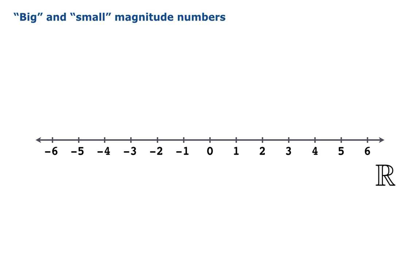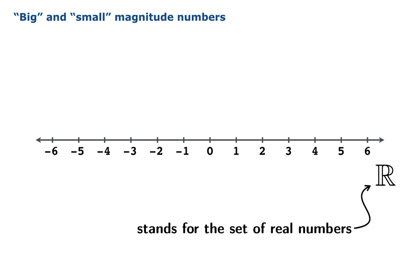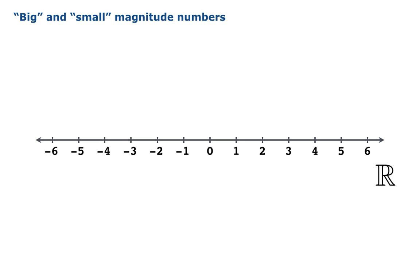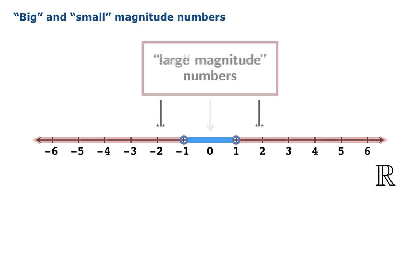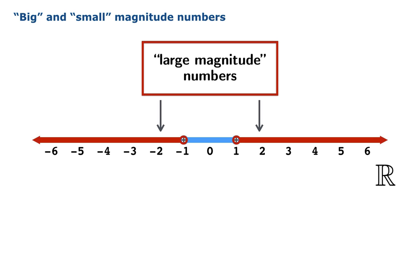For the purposes of this discussion, we're going to make a definition about real numbers. This symbol here stands for the set of all real numbers, so we have the real number line pictured. We're going to define small magnitude numbers to be those real numbers that lie between negative 1 and 1, and large magnitude numbers to be those numbers that are either bigger than 1 or smaller than negative 1. Negative 1 and 1 are neither big nor small in this scheme.